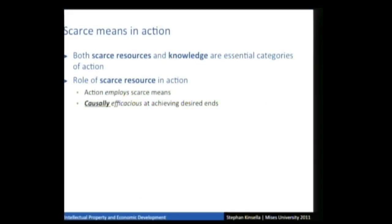For purposes of economic analysis, we need to analyze each type of IP differently. We need to analyze state interventions that protect knowledge differently from how we analyze the use of knowledge by actors and entrepreneurs. Both scarce means and knowledge are essential categories of action — this is why I started with praxeology. The structure of human action is essential to understand the role of knowledge and scarce resources.